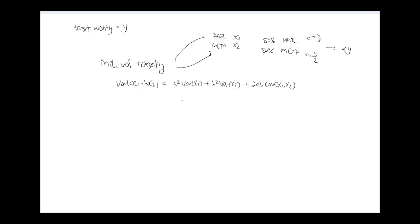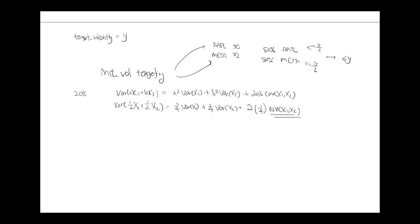Let me elaborate. Our target volatility was to hit 20%. If we split — so Var(½X1 + ½X2) — this gives us ¼ Var(X1) + ¼ Var(X2) + 2 · ¼ · Cov(X1, X2). So after we split, we're not going to hit the same target volatility Y.